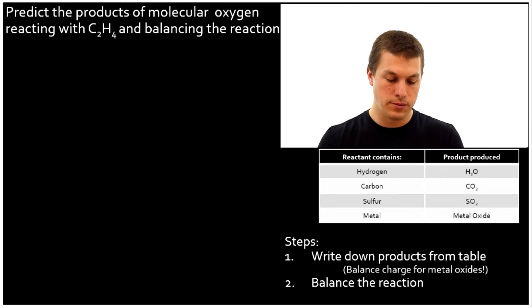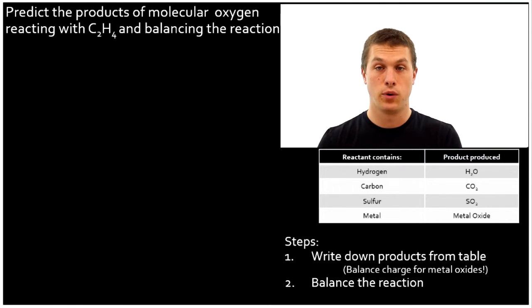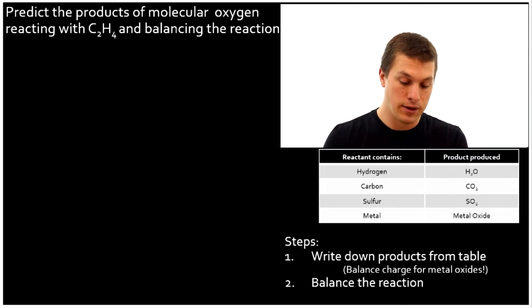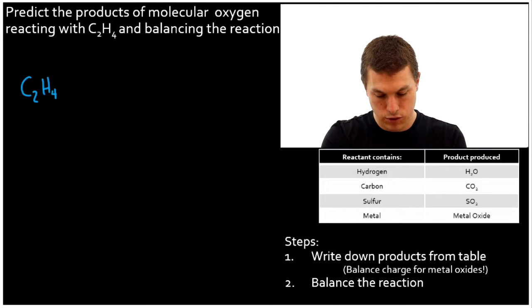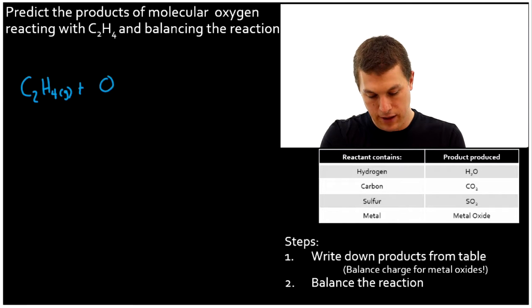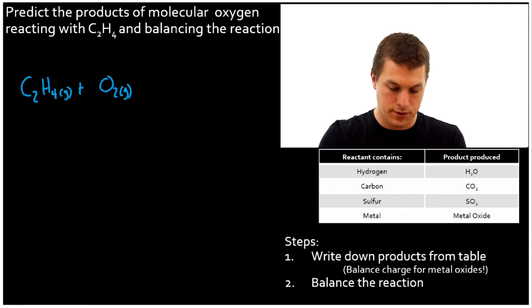Let's do longer examples now where we actually balance our final reaction. So this problem tells us to predict the products of molecular oxygen reacting with C2H4. That's ethene, as it turns out. And we want to balance that chemical reaction. So let's write down this reaction. Well, we're taking C2H4, which would be gaseous, by the way, and combining that with O2 gas. That's a combustion reaction.